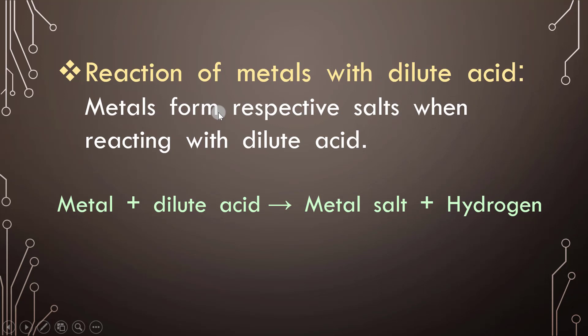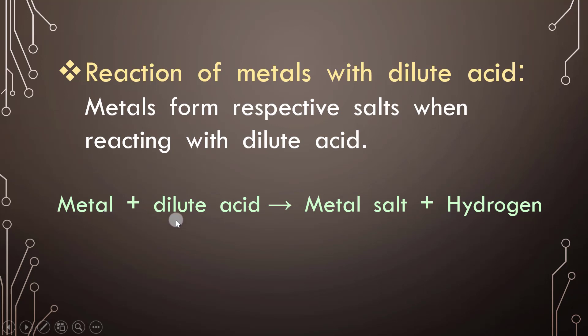Metals form a reactive salt when reacting with a dilute acid. Whenever a metal reacts with an acid, it produces a metal salt and hydrogen gas — the metal changes into its respective salt. The general equation is: Metal + Dilute Acid → Metal Salt + Hydrogen.